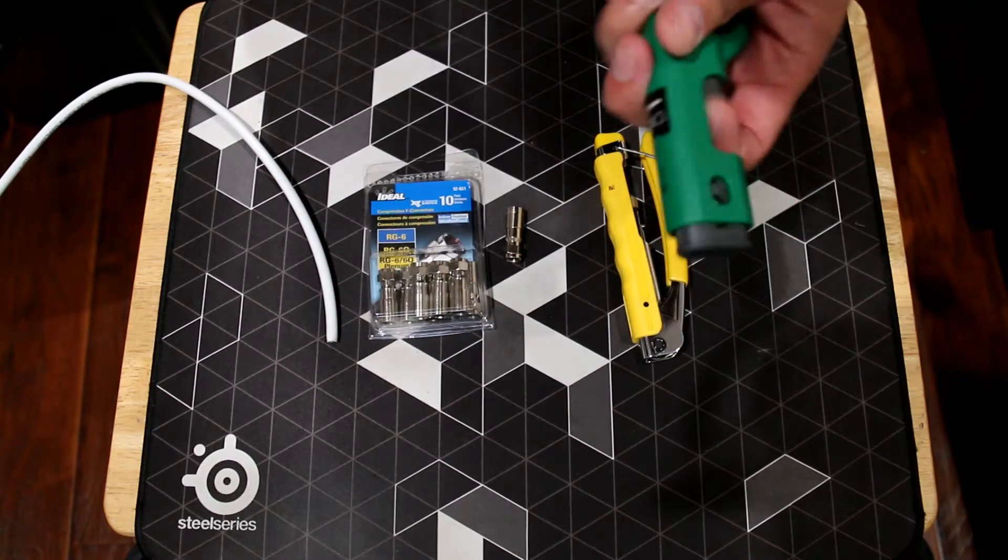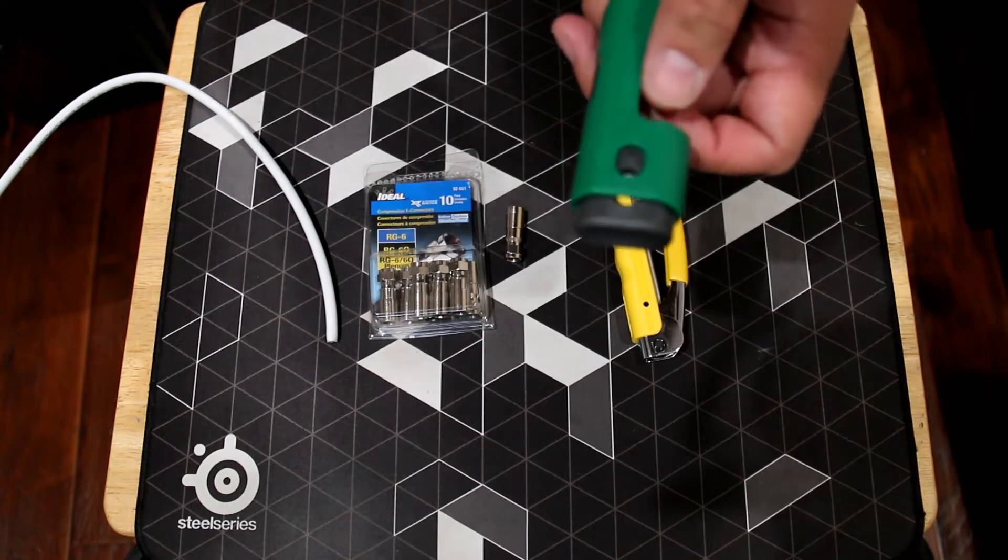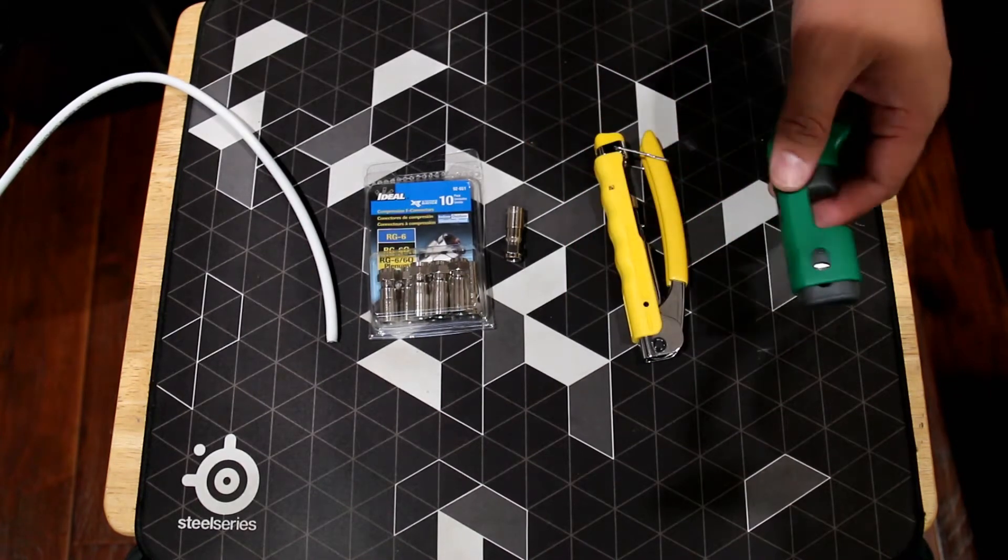First, you need a coax stripper. I recommend you buy this instead of using any exacto knife or blade to cut the coax. Chances of cutting your finger is high.